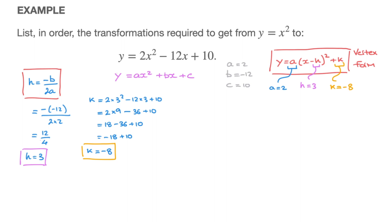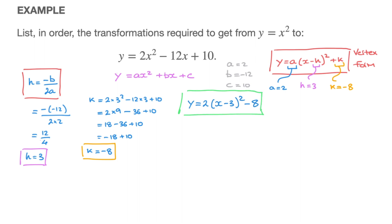Using the three values of a, h, and k, we can now rewrite our parabola in its vertex form: y equals 2 times (x minus 3) squared plus negative 8, so that's minus 8. We've written this parabola's equation in its vertex form.